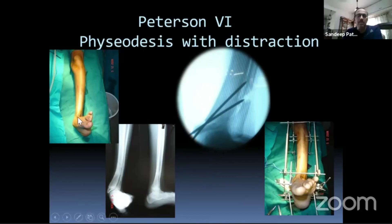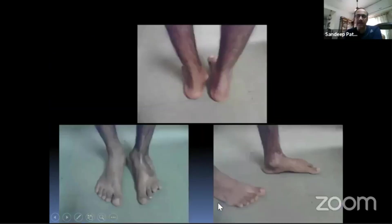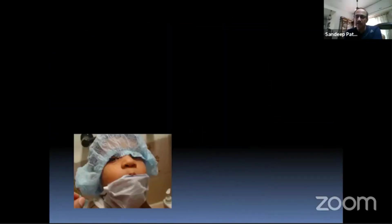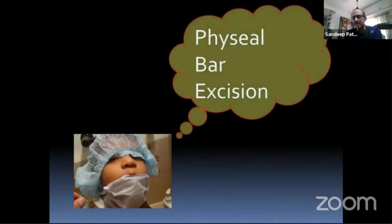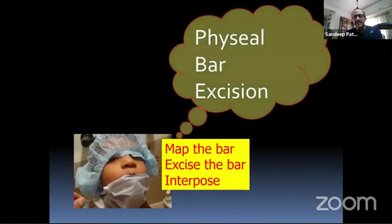Sometimes you have a Type 6 injury — a compound run-over injury with loss of skin — where you can do epiphysiodesis and soft tissue distraction or lengthening to get correction. Bar excision depends on three steps: one, map the bar; two, excise the bar completely; and three, interpose something to prevent reformation of the bar.